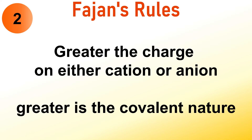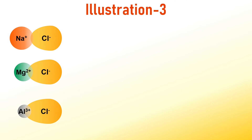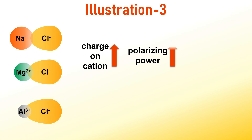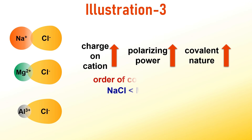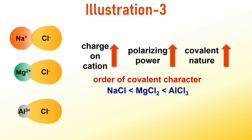Here is the second rule. As mentioned earlier, an increase in the charge on either the cation or anion leads to a greater covalent character in the bond. For example, in the case of chlorides of sodium, magnesium, and aluminium, as the positive charge increases from Na⁺ to Mg²⁺ to Al³⁺, the covalent character intensifies due to the heightened polarization of the anion. Hence, the order of covalent character increases from sodium chloride to magnesium chloride to aluminium chloride.